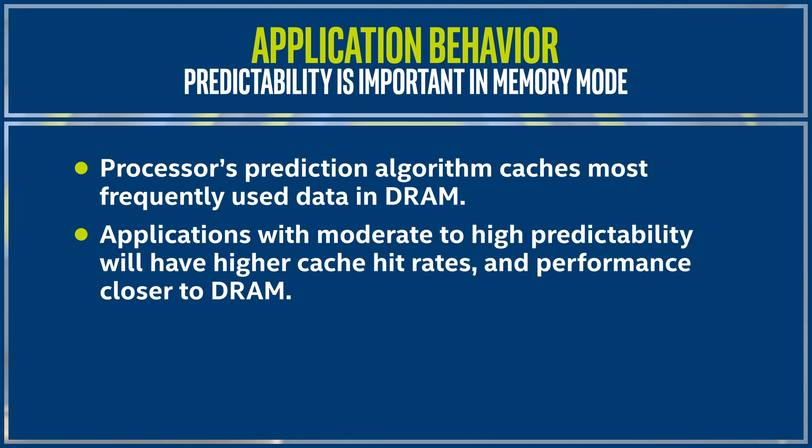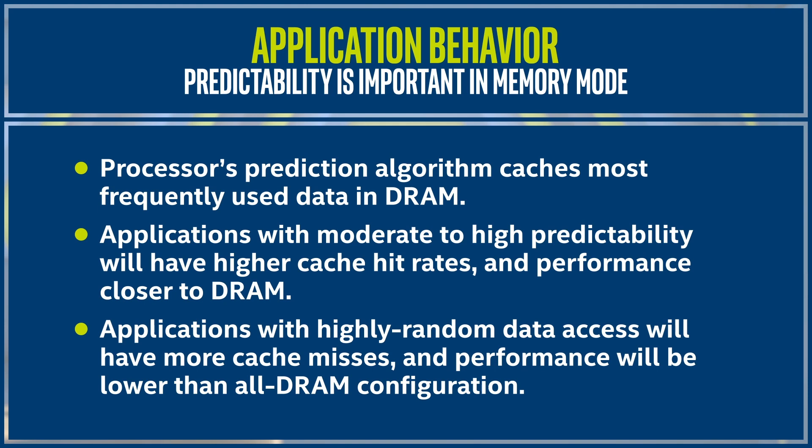But if the data isn't in the DRAM cache, the processor must fetch it from Optane Persistent Memory, which has a somewhat higher latency.